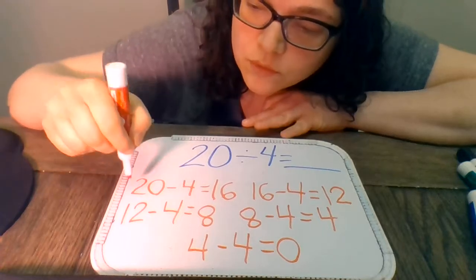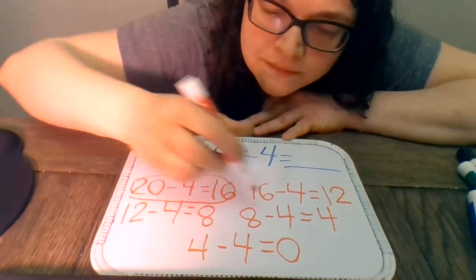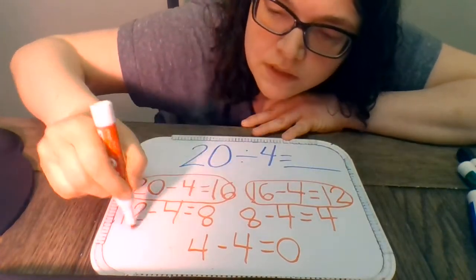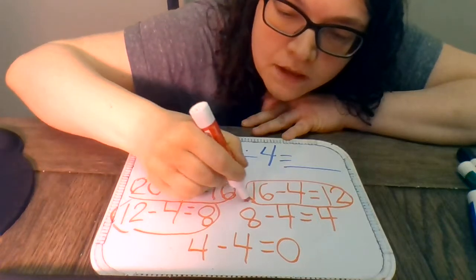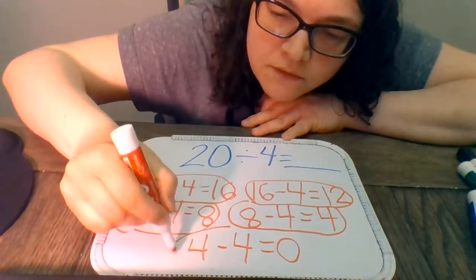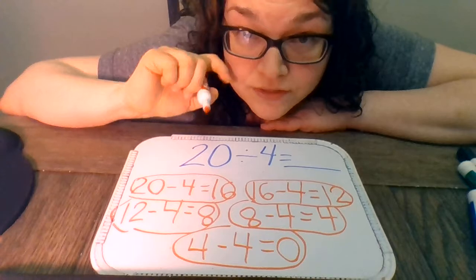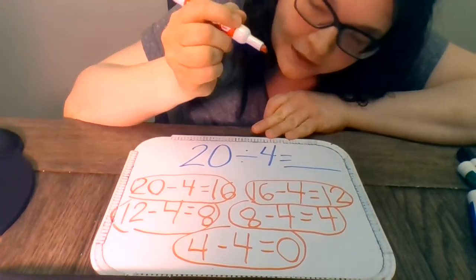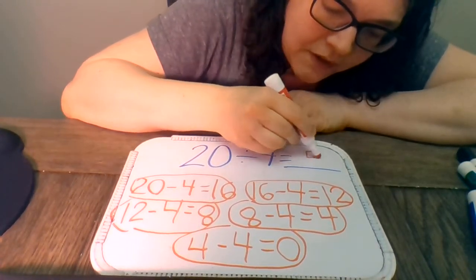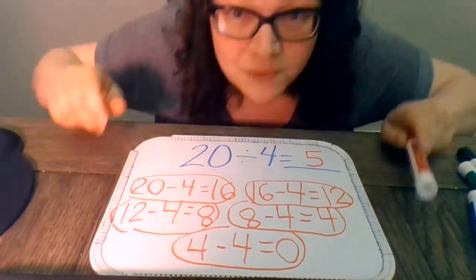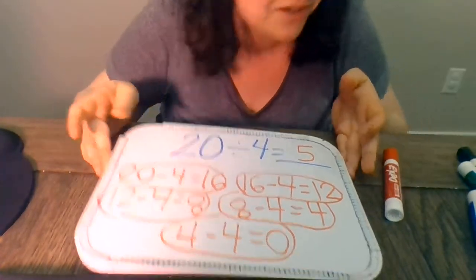Okay. So we did 1, 2, 3, 4, 5 different math questions to get to zero. So that should mean that our answer is 5. I think we better check our work and make sure that's correct.